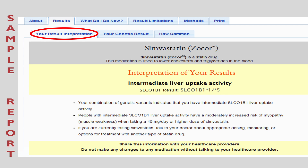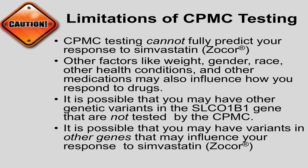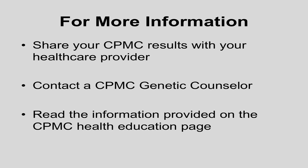Your result interpretation will give you information about how your combination of genetic variants impacts your expected liver uptake activity level and whether or not you are expected to respond well to Simvastatin, or if you may need a different dose or a different statin drug. For some results, we will not be able to provide an interpretation. It is important to note that CPMC testing alone cannot fully predict your response to Simvastatin or any type of drug. Other factors like weight, gender, race, or other health conditions and medications may also influence the way a person will respond to Simvastatin. It is also possible that you may have other genetic variants in the SLCO1B1 gene not tested by the CPMC, or variants in other genes that influence your response to Simvastatin. For more information, consider sharing your CPMC results with your healthcare provider or contact a CPMC genetic counselor. You can also read the information provided on the CPMC Health Education page.